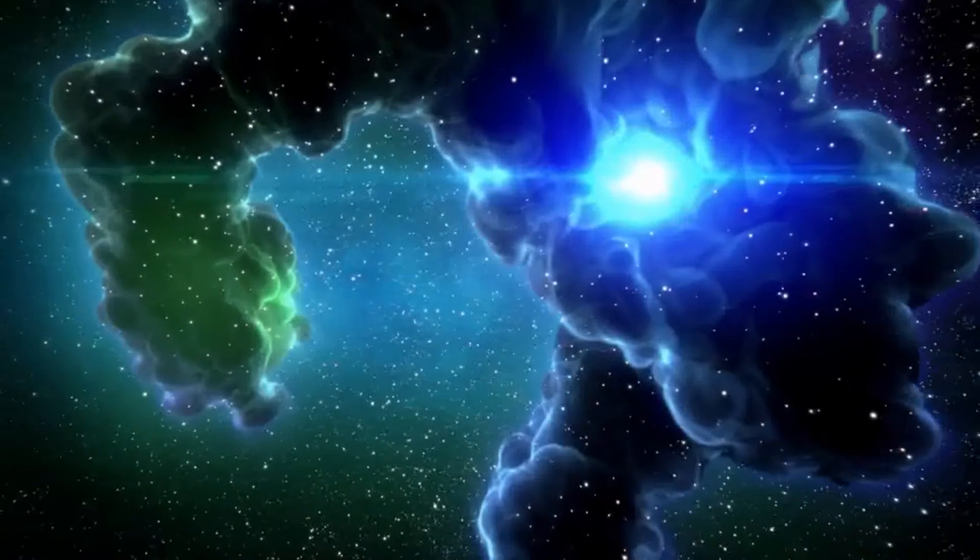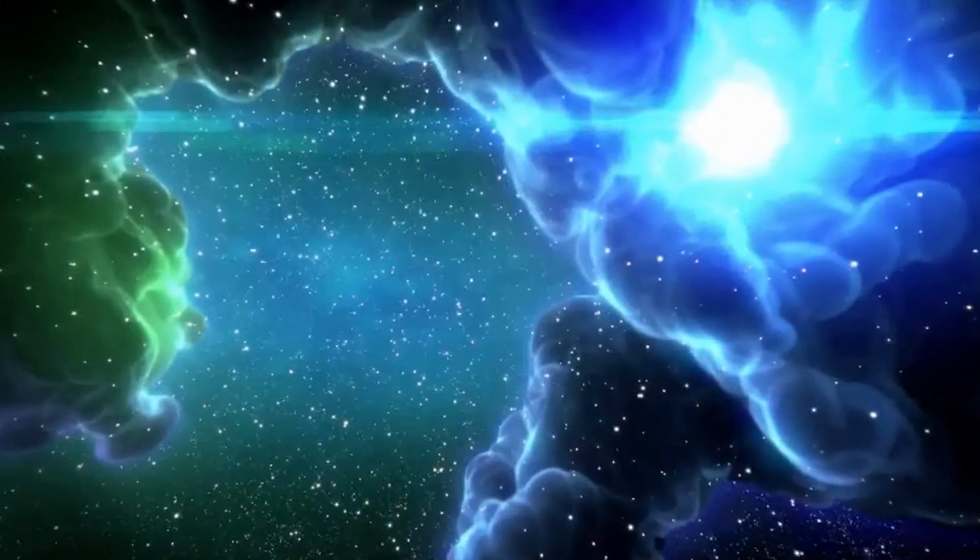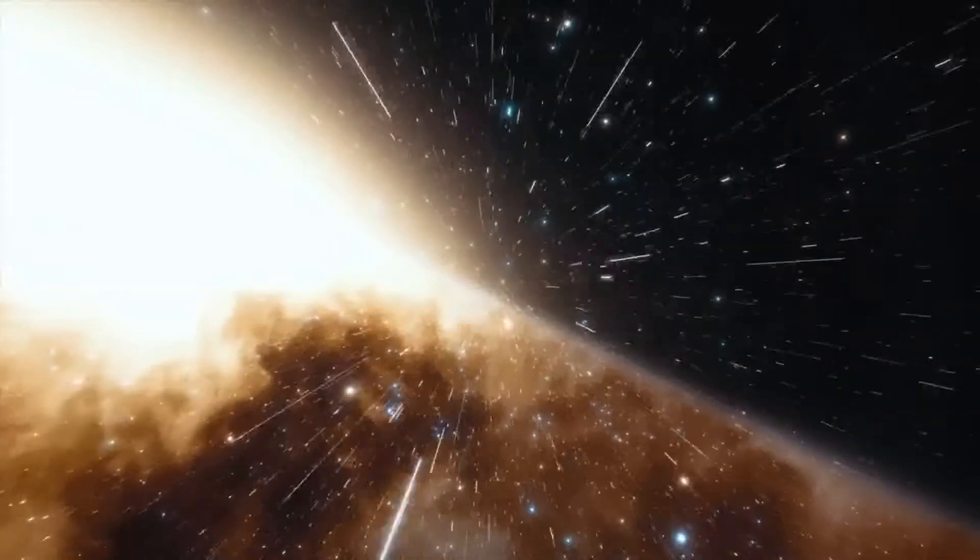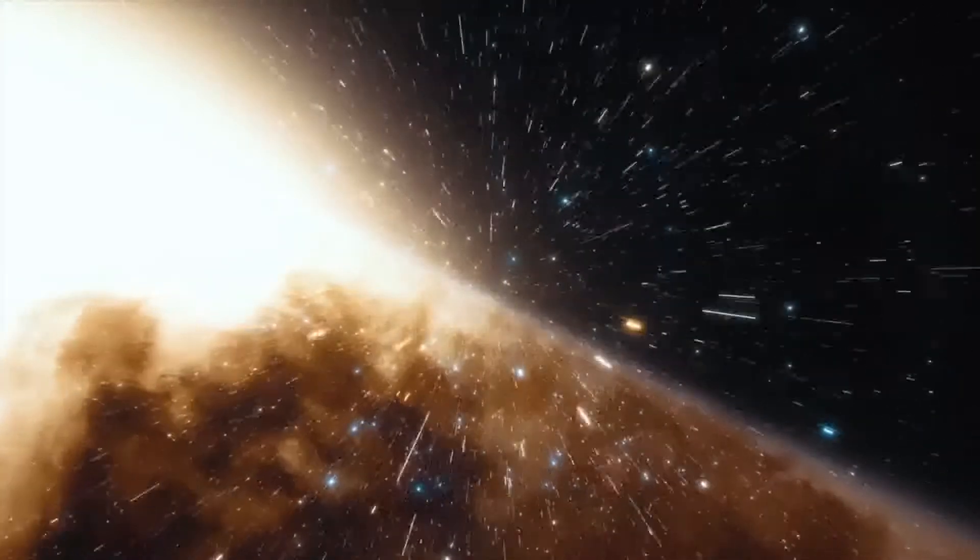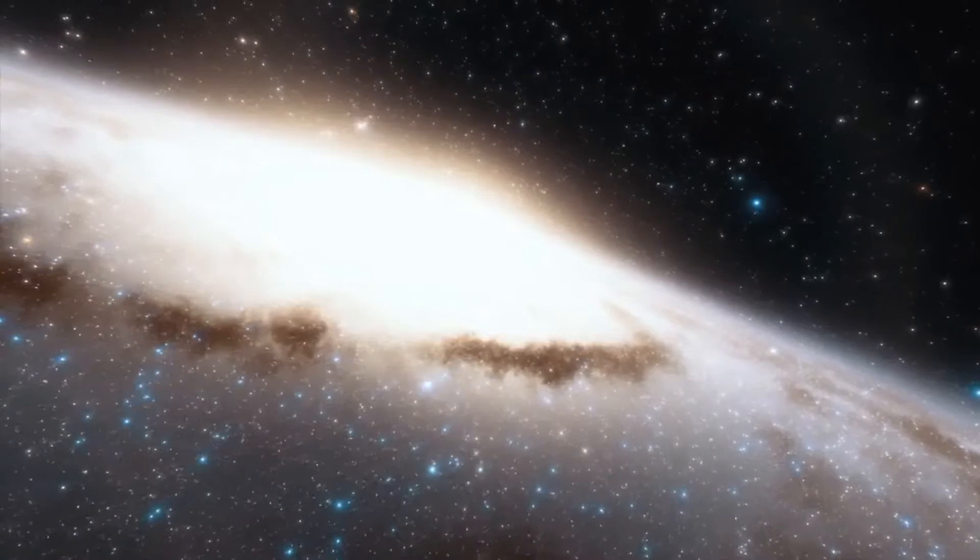Number 2: How do supernovas happen? When a star's nuclear fuel runs out, its own strong gravity takes over and the star collapses on itself. As a result, a violent explosion known as a supernova occurs.